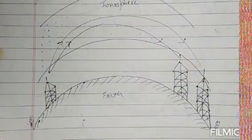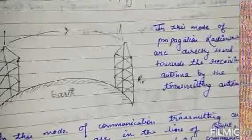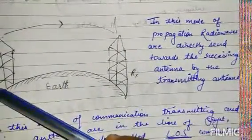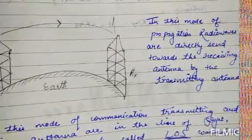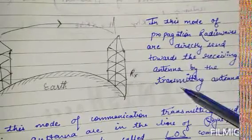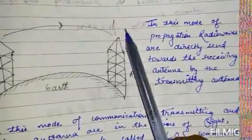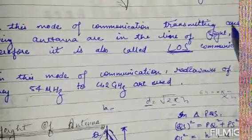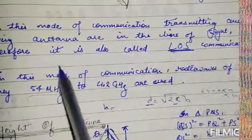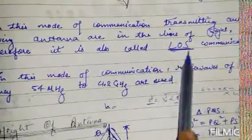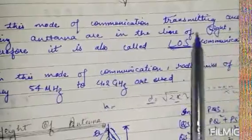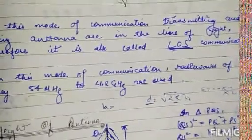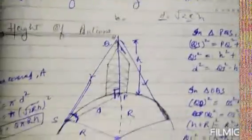In space and tropospheric wave propagation, also called line-of-sight (LOS) communication, the radio wave is directly sent from the transmitting antenna (TX) to the receiving antenna (RX). Both antennas must be in line of sight of each other. Radio waves of frequency 54 megahertz to 4.2 gigahertz are used in this mode.